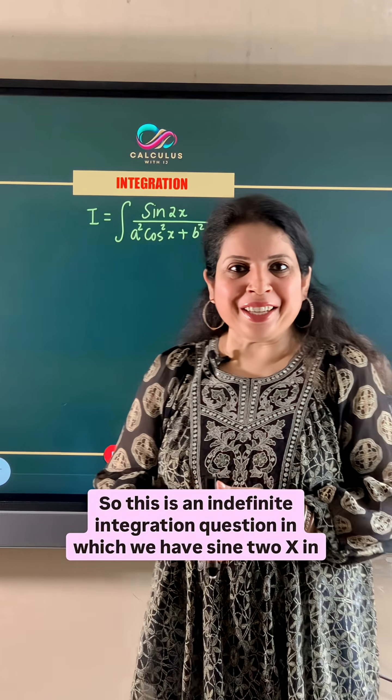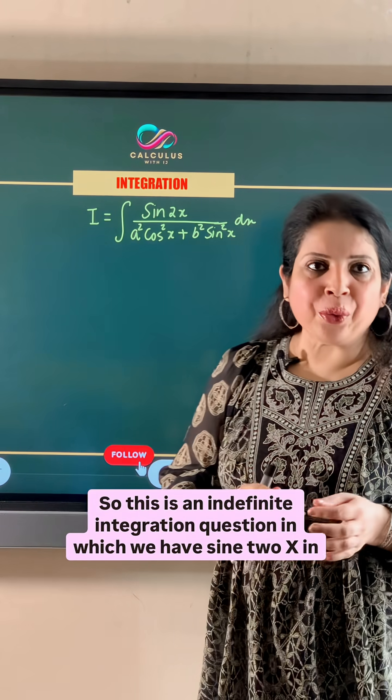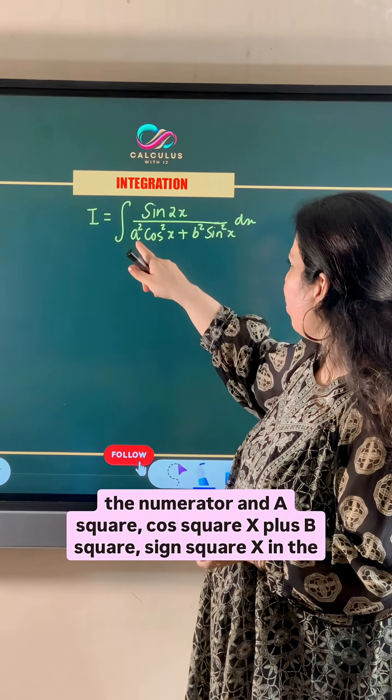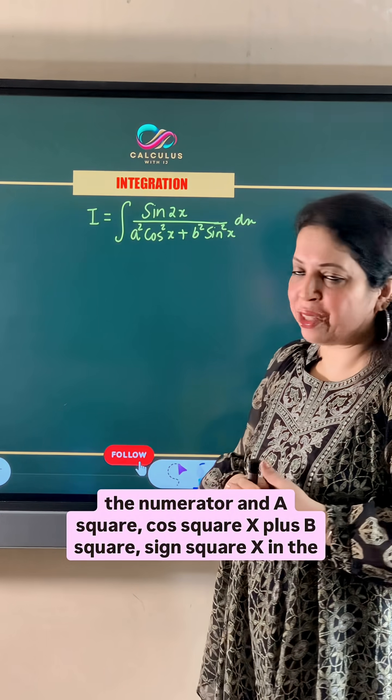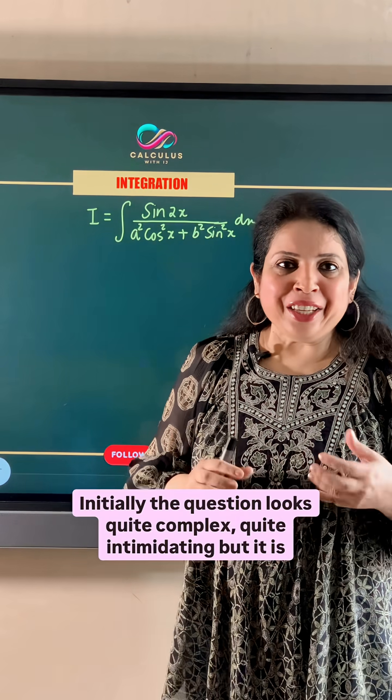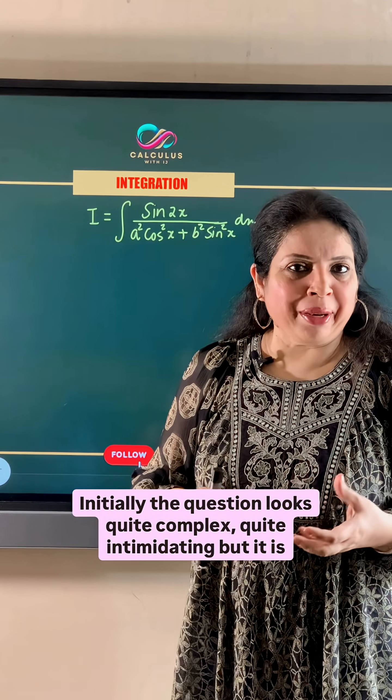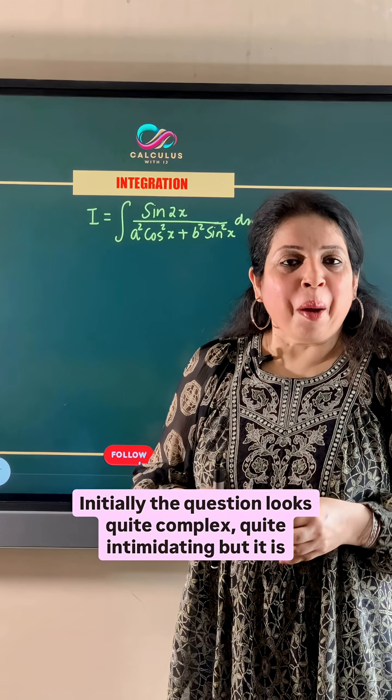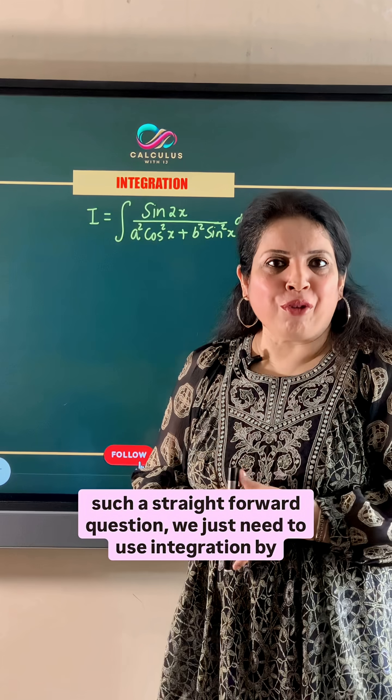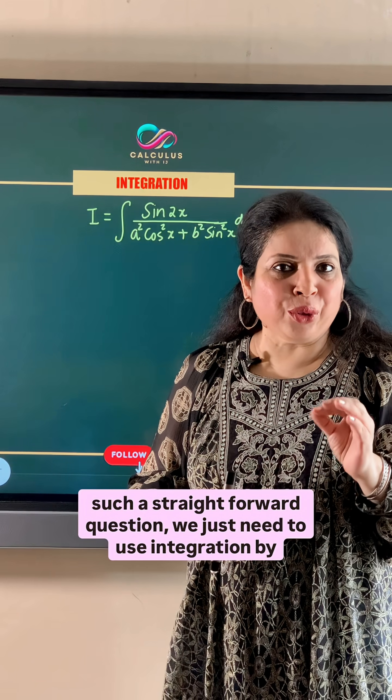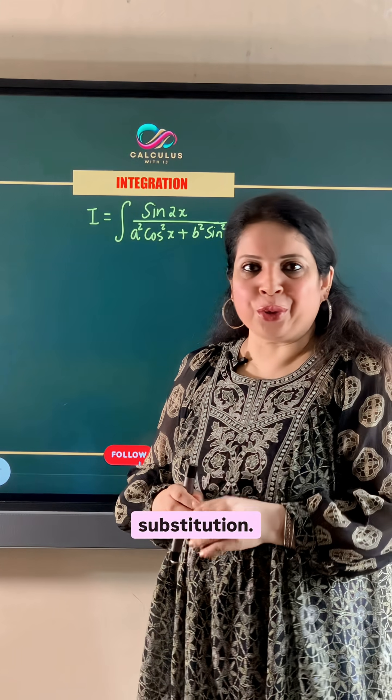So this is an indefinite integration question in which we have sin 2x in the numerator and a square cos square x plus b square sin square x in the denominator. Initially the question looks quite complex, quite intimidating, but it is such a straightforward question. We just need to use integration by substitution.